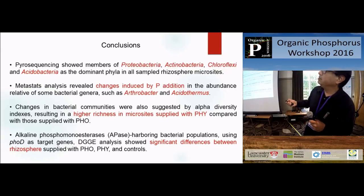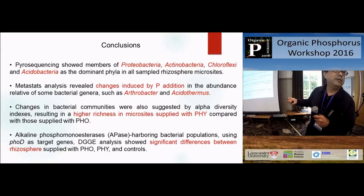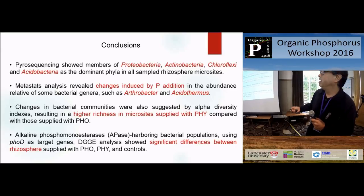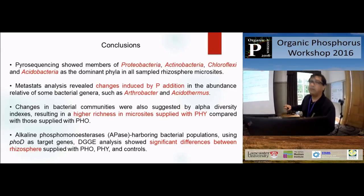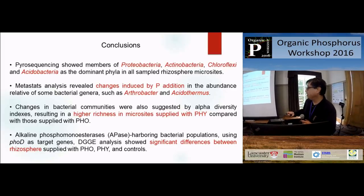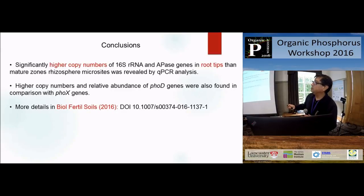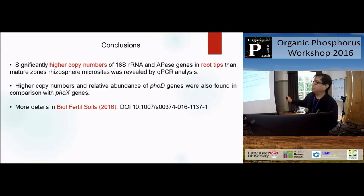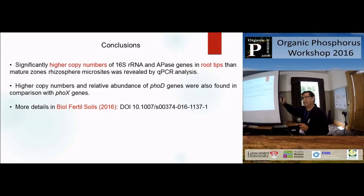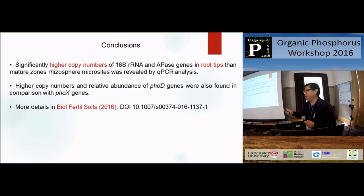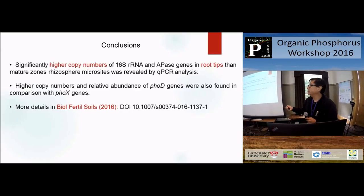Conclusion: In general we have Proteobacteria, Firmicutes, Chloroflexi bacteria dominant. We can find at the genus level differences with phosphorus addition. The enrichment is better with phytate, with addition of phosphatase bacteria. We can also see a significant difference with the phosphatase gene - it's simply a higher copy number of 16S and phosphatase gene in root tip. This gene compared to another gene shows a natural difference. We have different opposite proportions in different compartments of this agronomic soil. We have to continue studying - we have more data on this and the paper was recently published online.